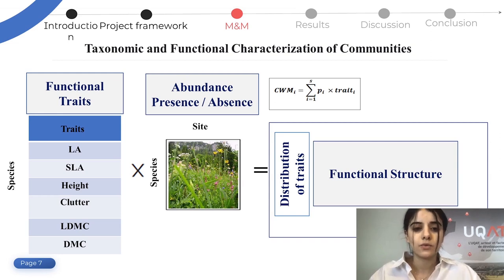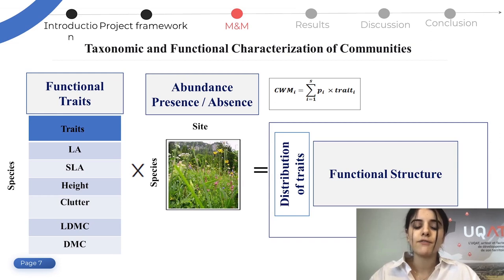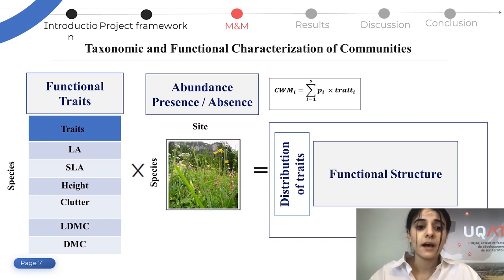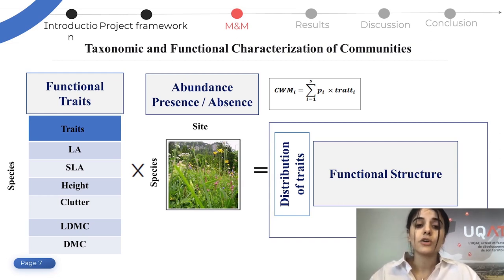According to this equation, T-I represents the value of the traits multiplied by PA, which is the relative coverage rate of the species. This gives us an idea of the distribution of plants and also of the functional structure of the community.